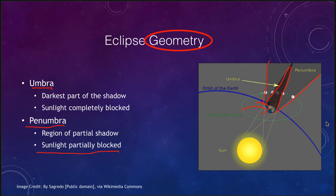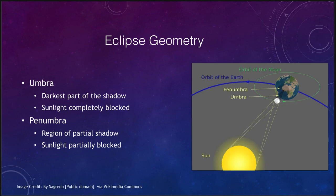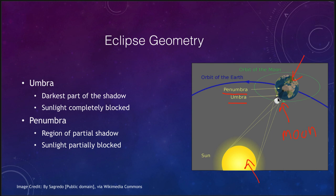A solar eclipse looks a little different. We still have the penumbra and the umbra. In this case the moon is now in between the earth and the sun, blocking the sun's light from reaching the earth. If you're in the umbra, the small dark portion, you would get a total solar eclipse, with the sun's light completely blocked. If you're in the wider penumbra region, the sun's light would only be partially blocked, so some sunlight would still get through.